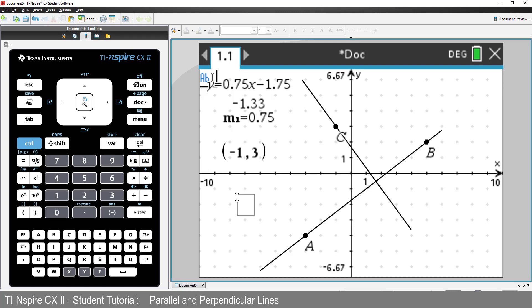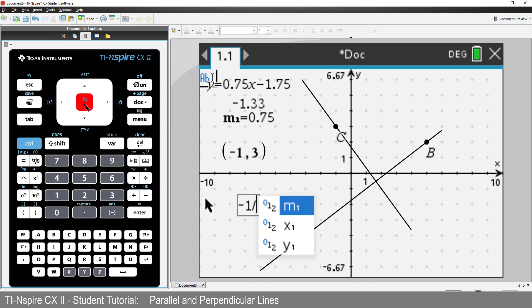We notice that the perpendicular line has the opposite sign to the original. So, we'll start by typing a negative sign. We also notice that the relationship appears to be a reciprocal type arrangement. As one goes up, the other one goes down. So let's write 1 over M1 and press Enter.